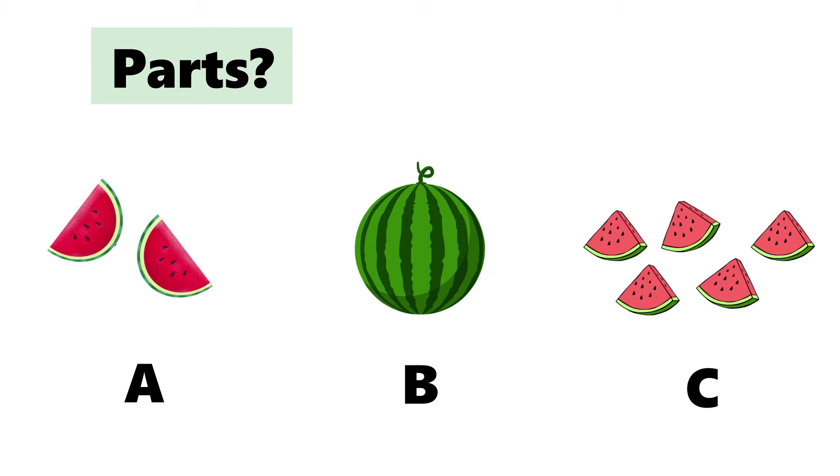Which are parts? A and C are both parts. The watermelon has been cut up into smaller pieces.